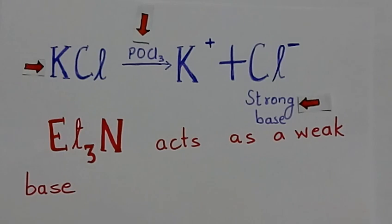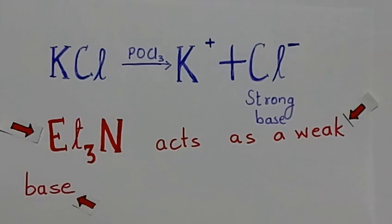Potassium chloride, again a strong chloride donor, acts as a base. Triethyl ammonia acts as a weak base in phosphoryl chloride.